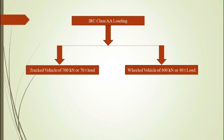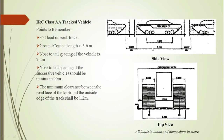Now let us understand IRC Class AA loading in detail. A vehicle is said to be of IRC Class AA loading if it is a track vehicle of total load 700 kN or 70 ton, or it is a wheeled vehicle of total load 400 kN or 40 ton.